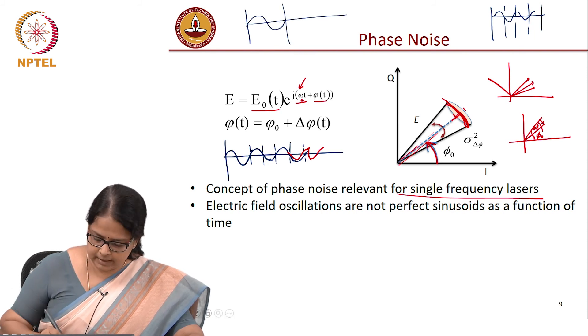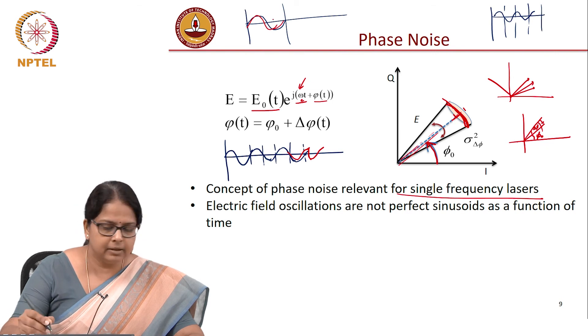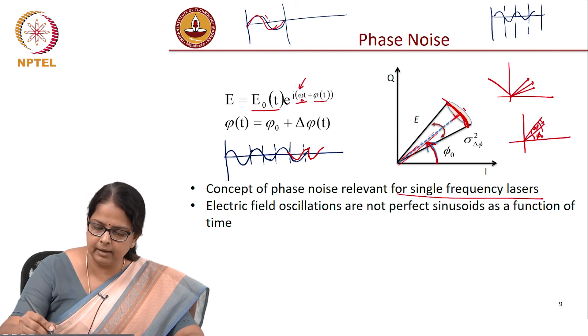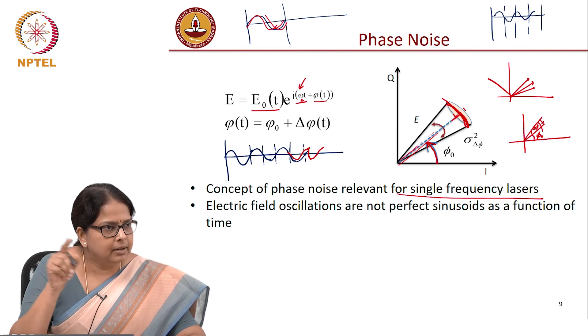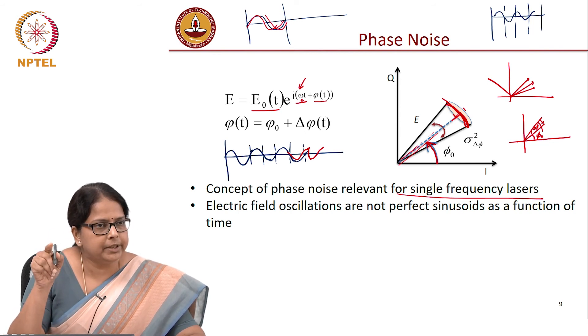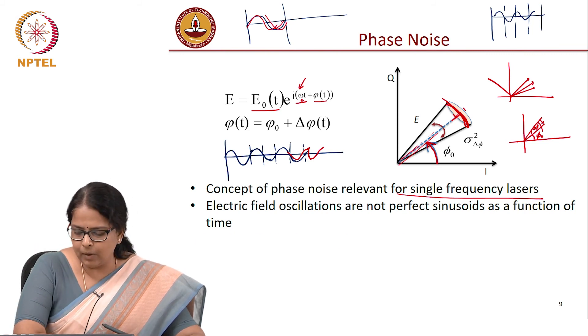first cycle could be this, second cycle could be, you know, something like this, third cycle could be slightly off from here and so on. There is some kind of a phase ambiguity there. That is how it will look like if you were to see this. Now, why is this happening?